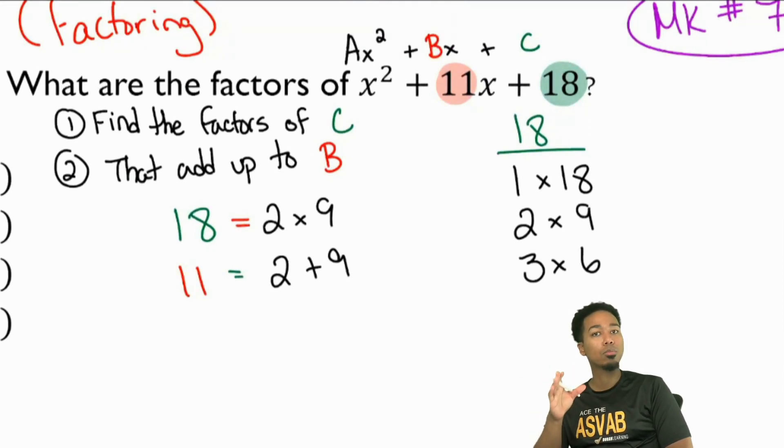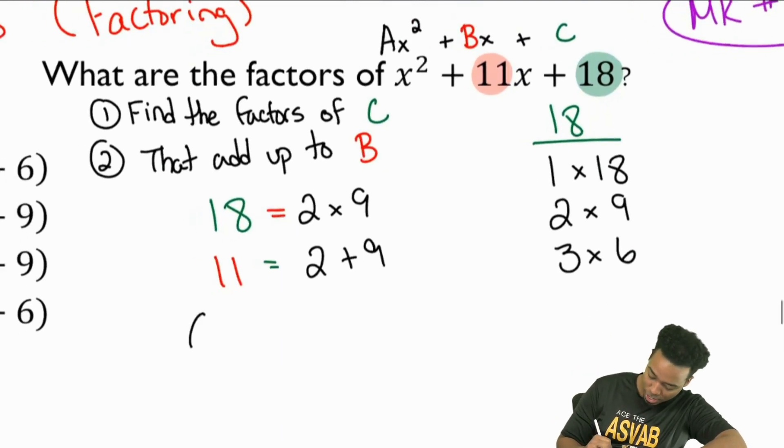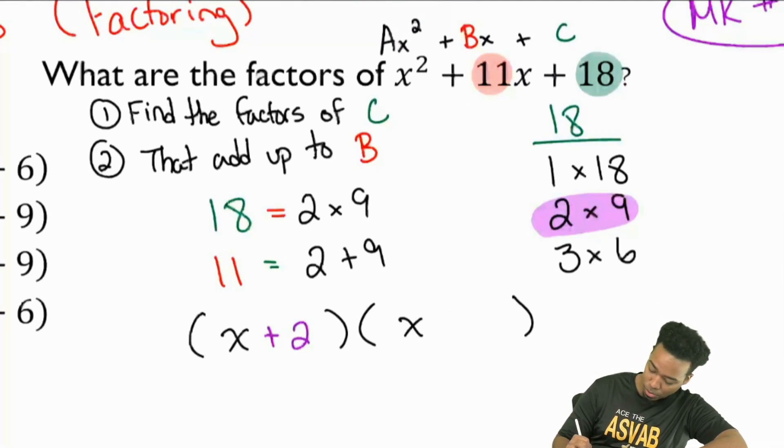So again, what factors can you multiply to get a C and add to get the B? It's 2 and 9, those are the numbers that work. Once you have the numbers that work, this is how beautiful it is. You just have x and x, and so the factors that you have are right here. Since you have a positive 2 and a positive 9, that'll be plus 2, plus 9, and you're done.